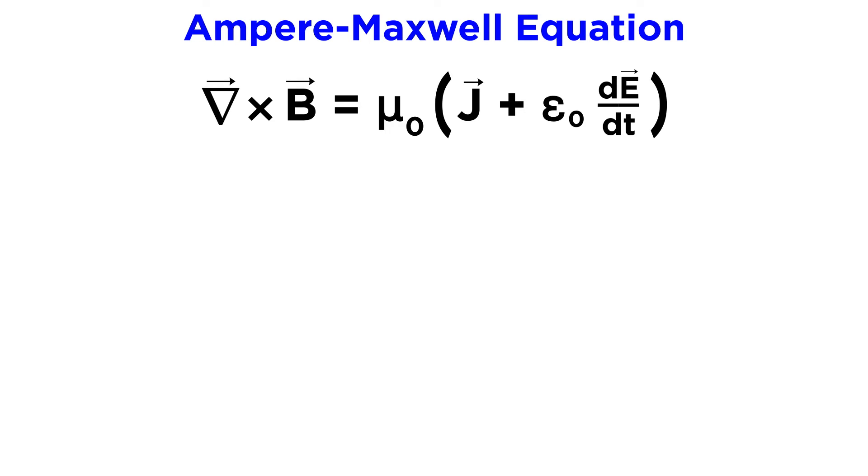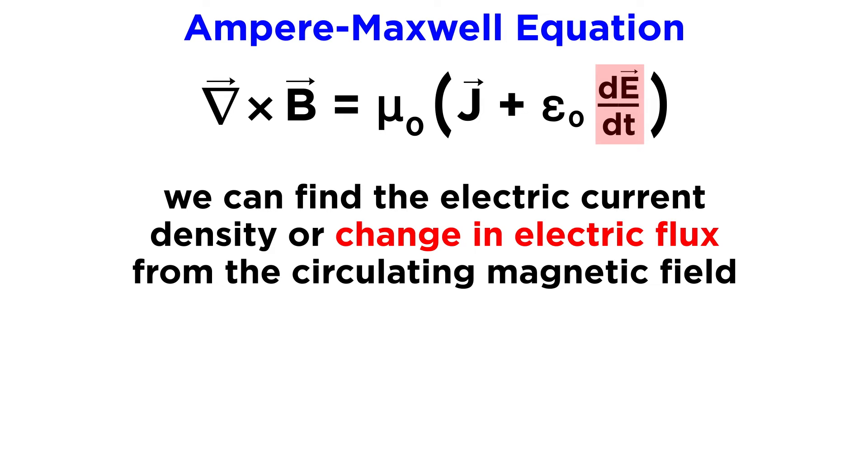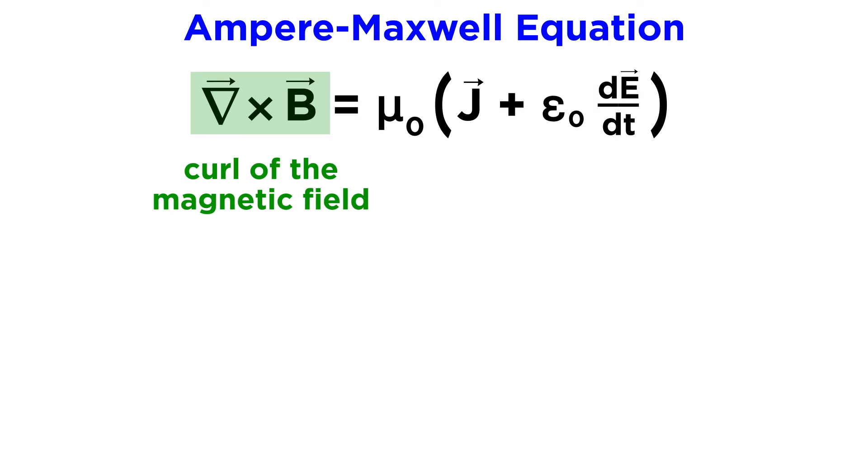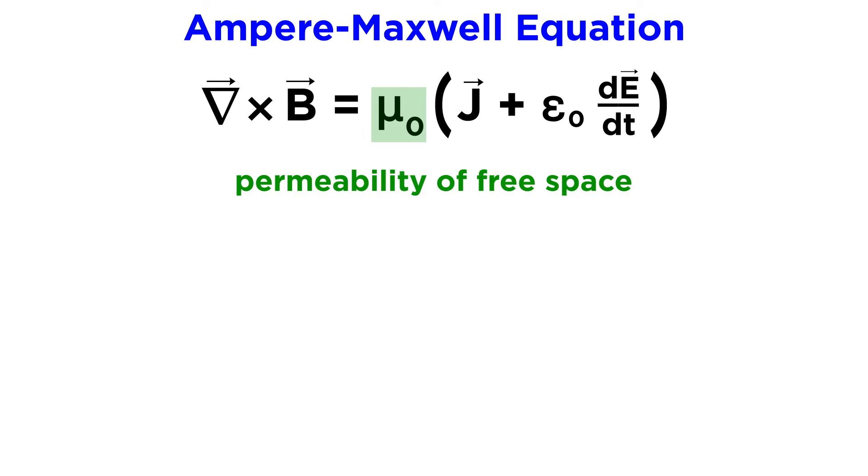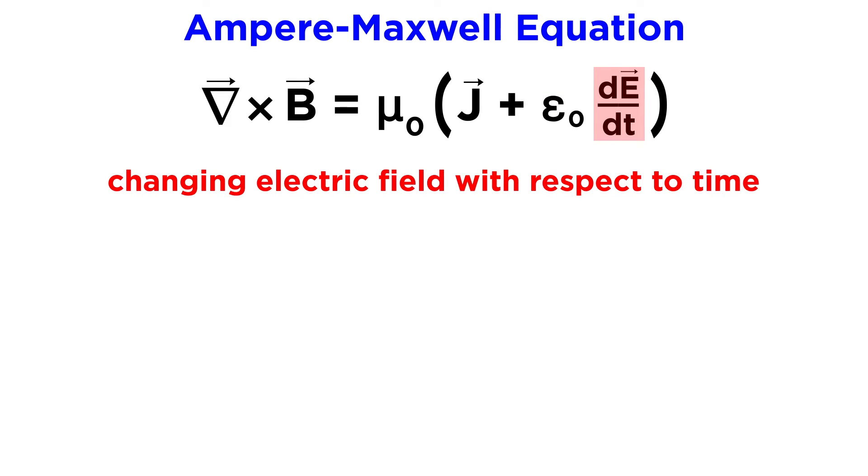The differential form of the Ampère-Maxwell law is more often used in the opposite direction of the integral form, to find the electric current density or change in electric flux from the circulating magnetic field. This form looks like this, with the cross product or curl of the magnetic field on the left, and then this other term on the right. Mu naught is back again, which is the permeability of free space, times this sum. J is the current density, and then we have epsilon naught, the permittivity of free space, times the changing electric field with respect to time in the region in question.